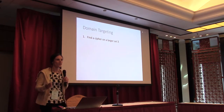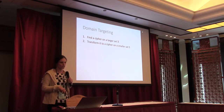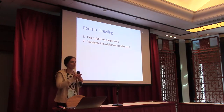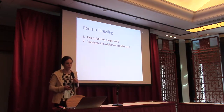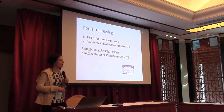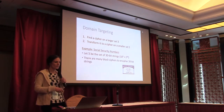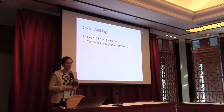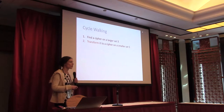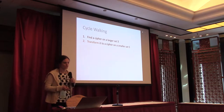We're going to find a larger set that includes our target set and look at an existing cipher on this larger set. Then we're going to transform the cipher on this larger set to a cipher on our smaller target set. Going back to the running example of Social Security numbers, if we consider X to be the set of 30-bit strings, there are many ciphers we can use — that leaves us with the problem of how to turn a cipher on the larger set into one on the smaller set.